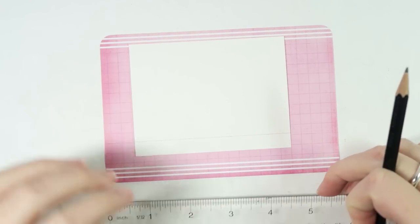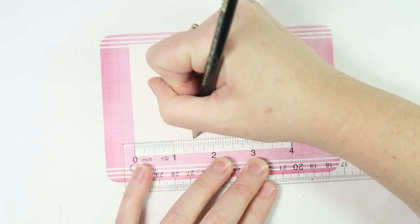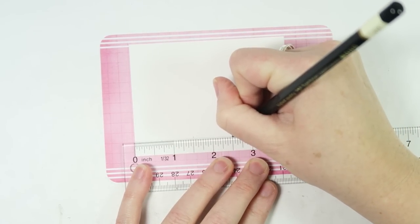Once you have that, line up your ruler with that line you made. Then you want to measure in and make a mark at one and a half and then at two and a half like that.